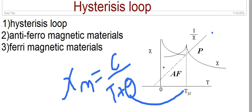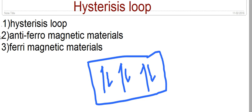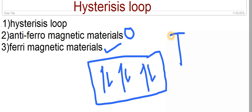Now we see what are ferrimagnetic materials, also called ferrites. They are similar to anti-ferromagnetic materials, but the difference is that in ferrimagnetic materials the dipole moments of adjacent atoms are not equal — they are opposite in direction but not equal in magnitude. This means there is a net magnetic moment present in ferrimagnetic materials, though this magnetic moment is not as large as in ferromagnetic materials. So ferrimagnetic materials have net magnetization, while anti-ferromagnetic materials have zero magnetization. For ferrimagnetic materials, above a particular temperature called the Curie temperature, the magnetization becomes zero and the material becomes paramagnetic.